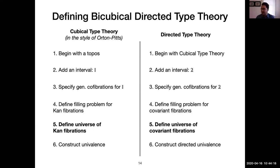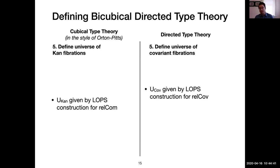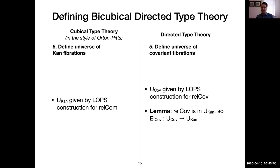Now the goal is to define universes that classify types satisfying these filling problems. Using the internal predicate and applying the LOPs construction, we get the con universe from cubical type theory, and also a universe of covariant fibrations. One detail: the predicate defining covariant fibrations is itself con, so when we use the LOPs construction we can restrict the con universe to get a smaller covariant universe. All types in the covariant universe are both covariant and con, and the decoding function turns a covariant type into a con type.